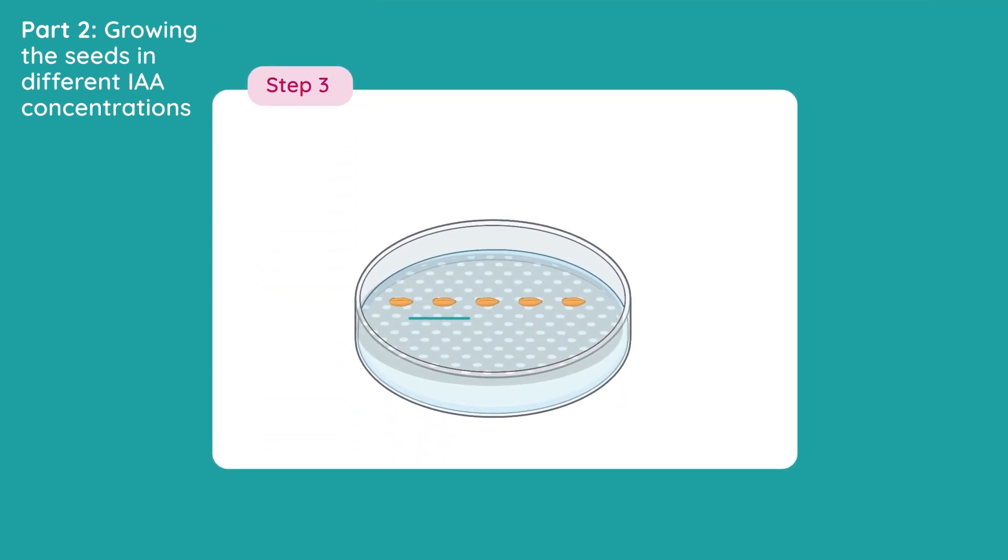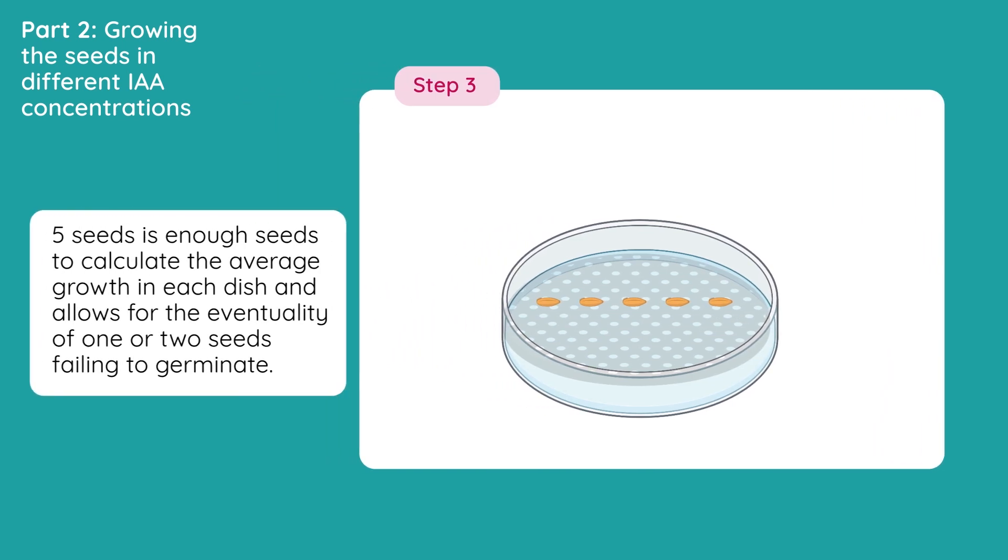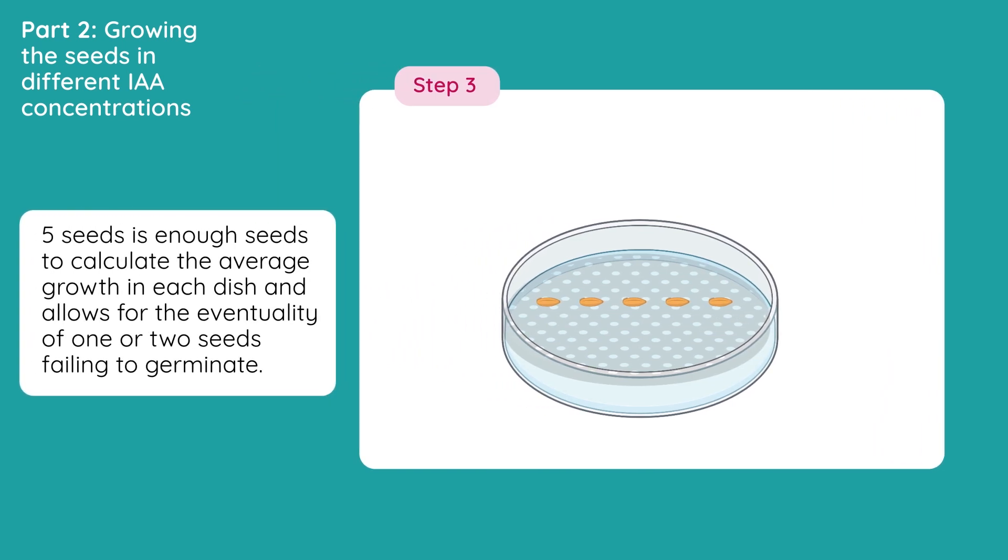Place 5 radish seeds along the middle line of the acetate grid sheet in each petri dish. 5 seeds is enough seeds to calculate the average growth in each dish, and it also allows for the eventuality of 1 or 2 seeds failing to germinate.